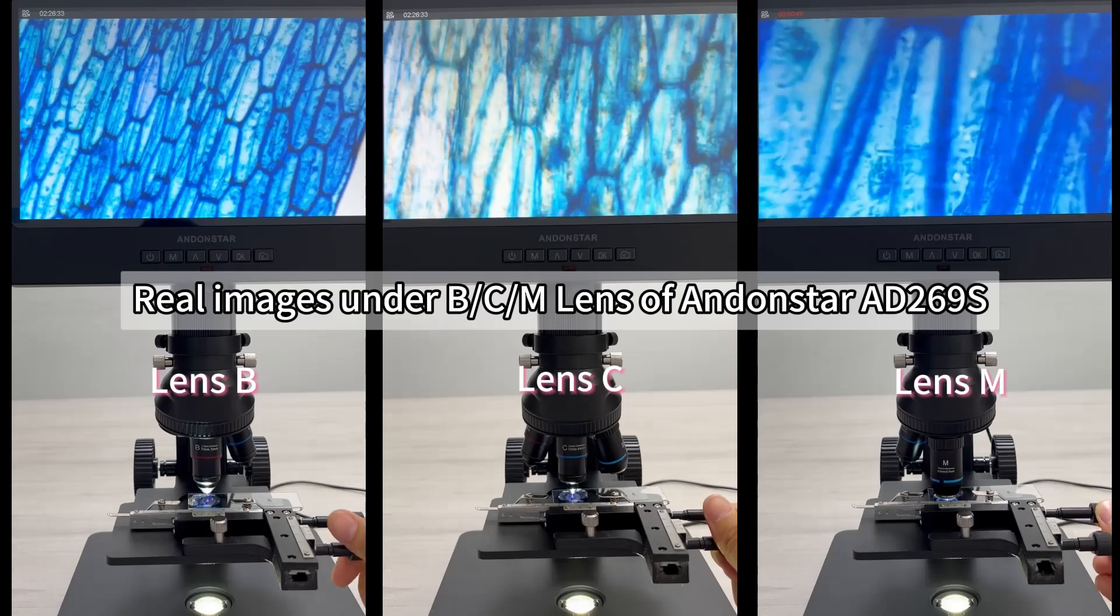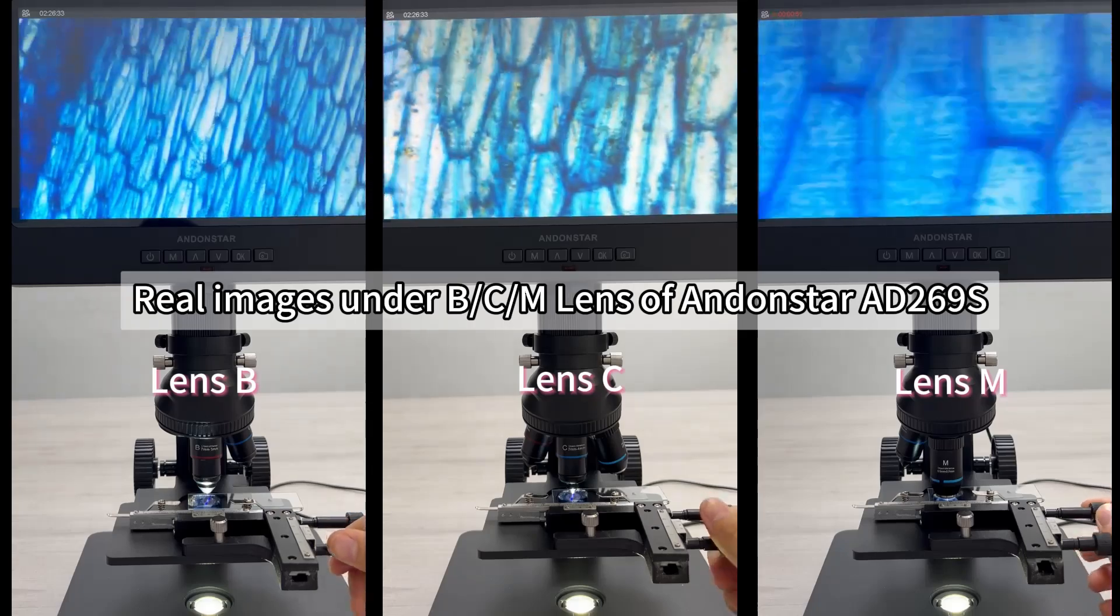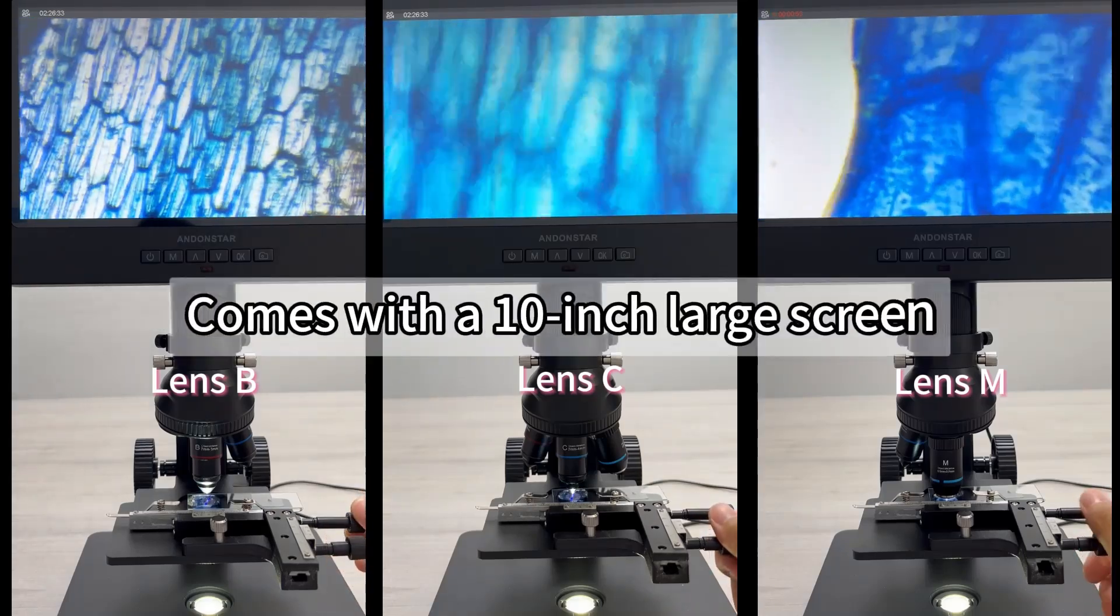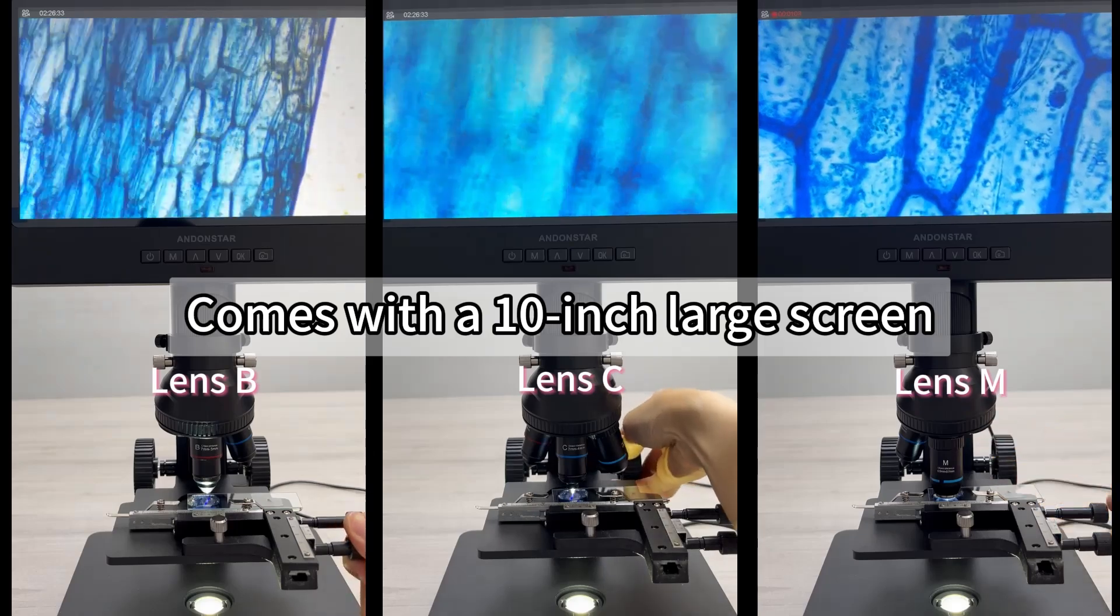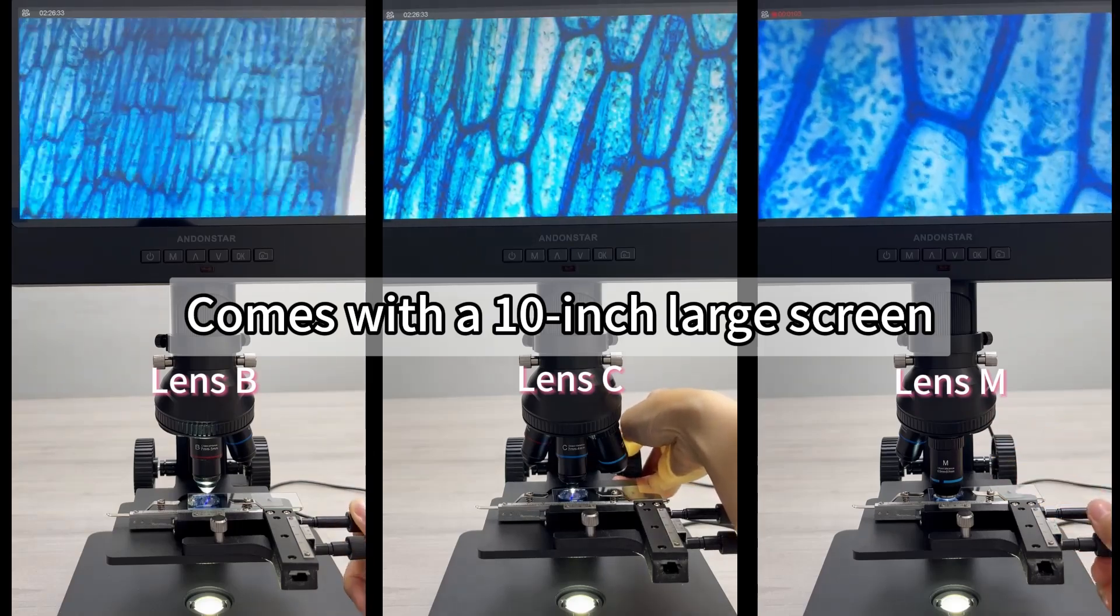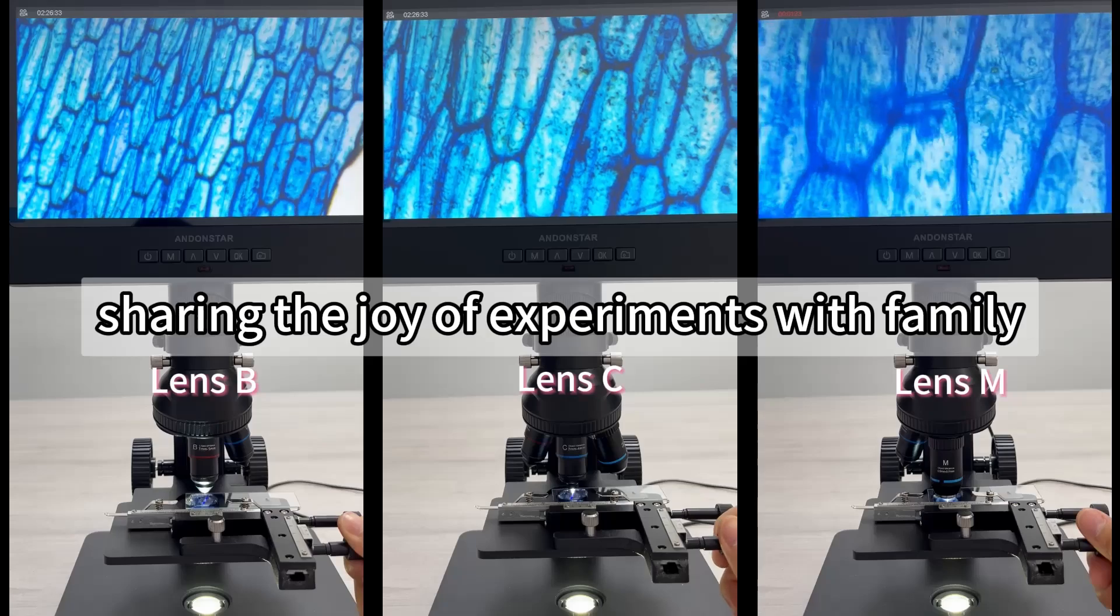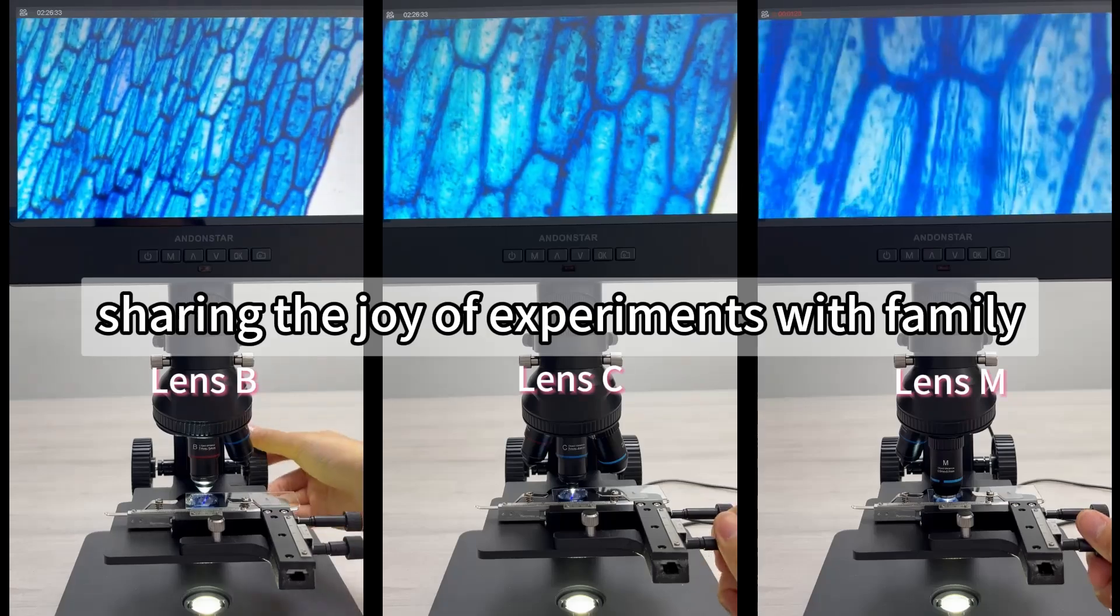Real images under B, C, or M lens of Andonstar AD269S. Comes with a 10 inch large screen. Sharing the joy of experiments with family.